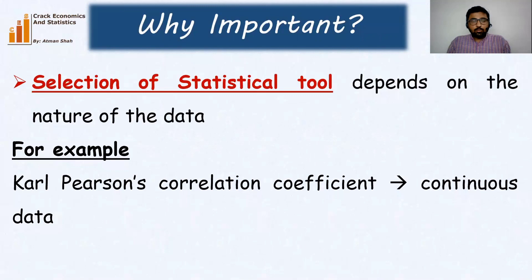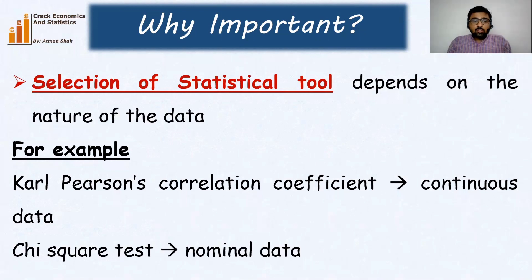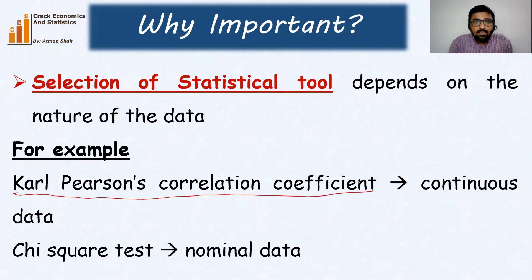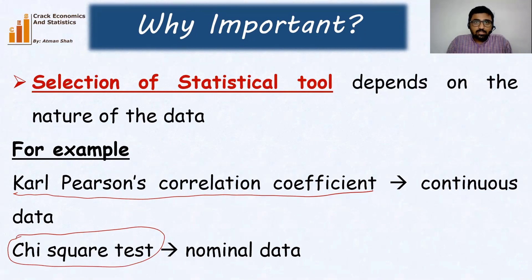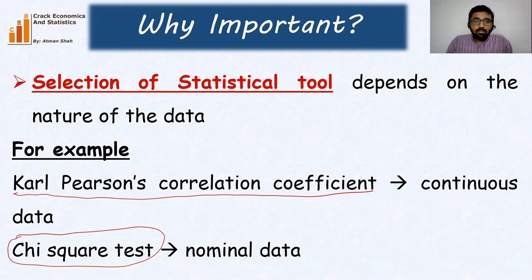Karl Pearson's correlation coefficient is used to find the association between two variables when we have continuous data — so both the variables are continuous. On the other hand, we use the chi-square test to find the association between two nominal variables. So both these tests — Karl Pearson's correlation coefficient and the chi-square test — are used to find the relationship between two variables, but the selection depends on the nature of the data.